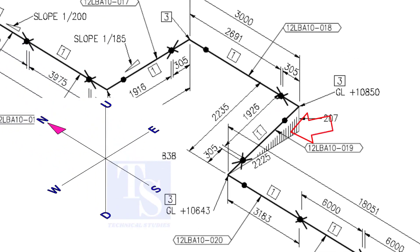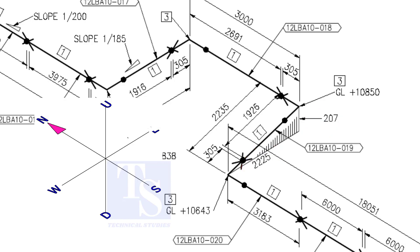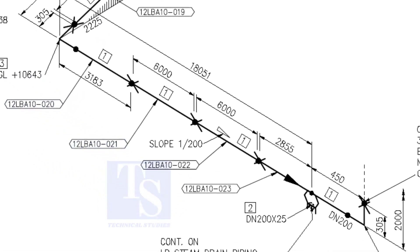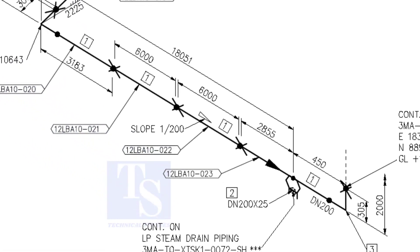The vertical shade shows the line turns in the down direction. Since the set and the run are different, you can guess that this is not a 45-degree turn. Here, the slope ratio is 1 is to 200. Can you tell the slope for a 6,000 millimeter long pipe based on this ratio?